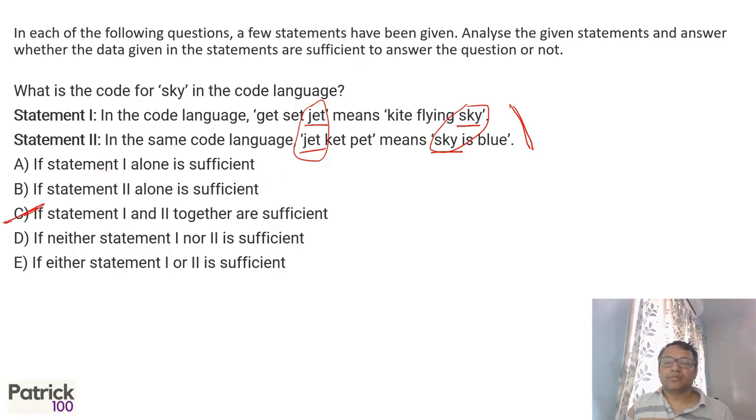We look at commonality. Sky is common in both, so jet also is common in both. So sky should be 'jet'. I can get the code for sky. That will be the answer for this.